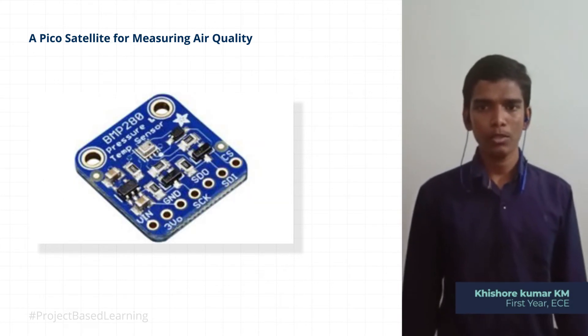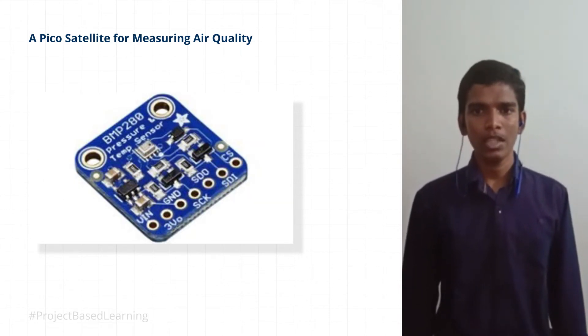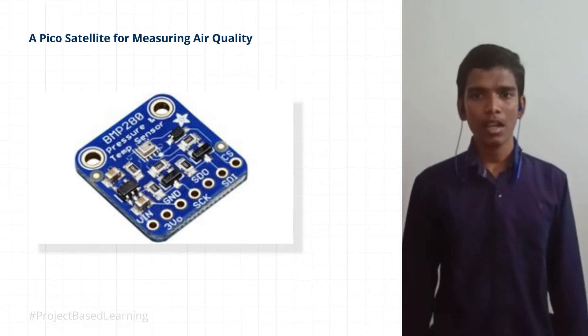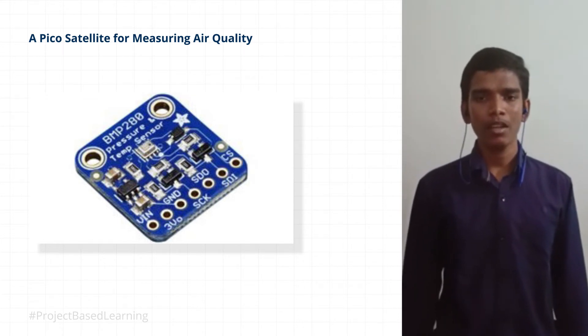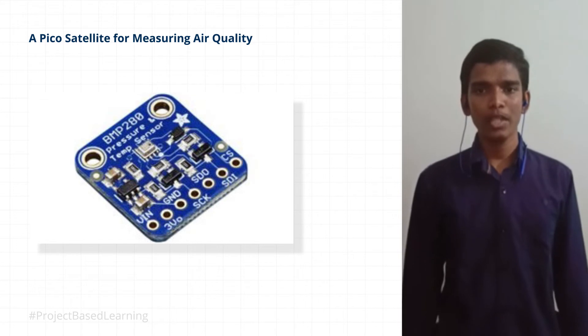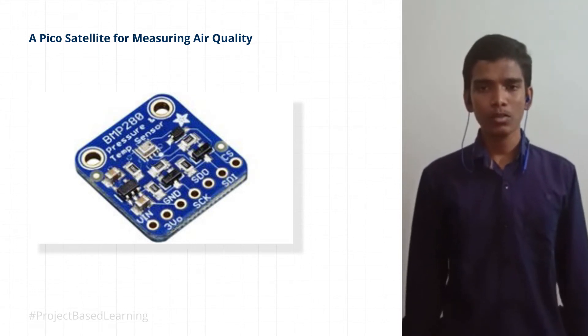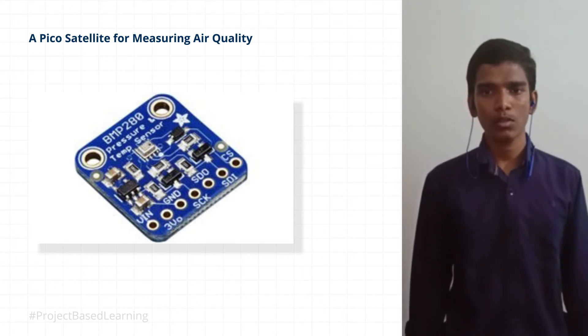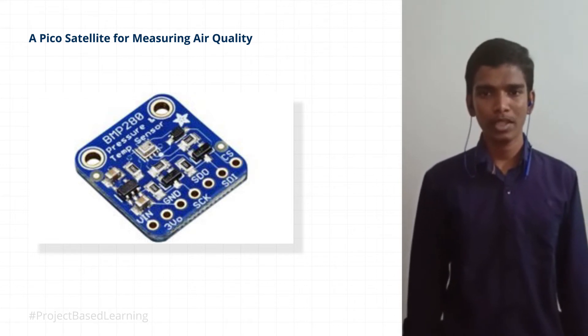First, BMP280. It is the temperature sensor we used. It also detects pressure and altitude. With this data, we can interpret the humidity in the region. It has a wider detecting range and is an extremely low power consuming sensor.